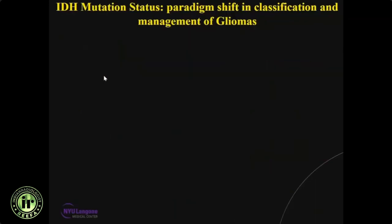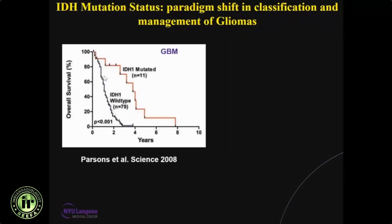In the last 10 years, with the discovery of IDH mutation, there has been a paradigm shift in the classification and management of gliomas. One of the earliest papers in Science showed that if you have IDH-mediated glioblastoma, there is much better survival compared to IDH wild-type glioblastoma. So even though the histological diagnosis is the same — glioblastoma — if you have IDH mutation, these patients do much better than IDH wild-type patients.